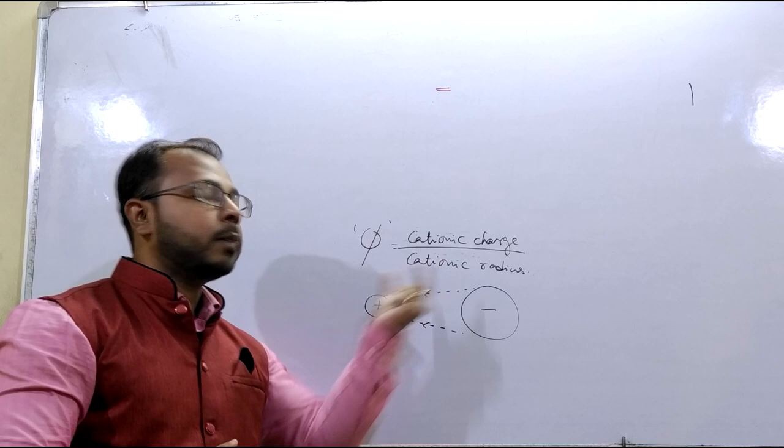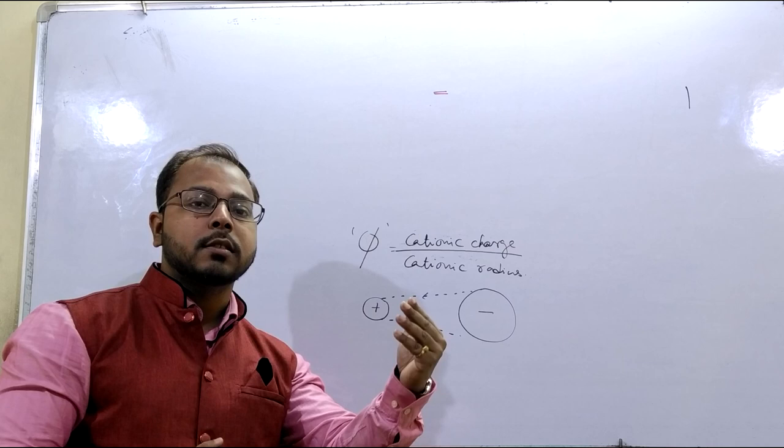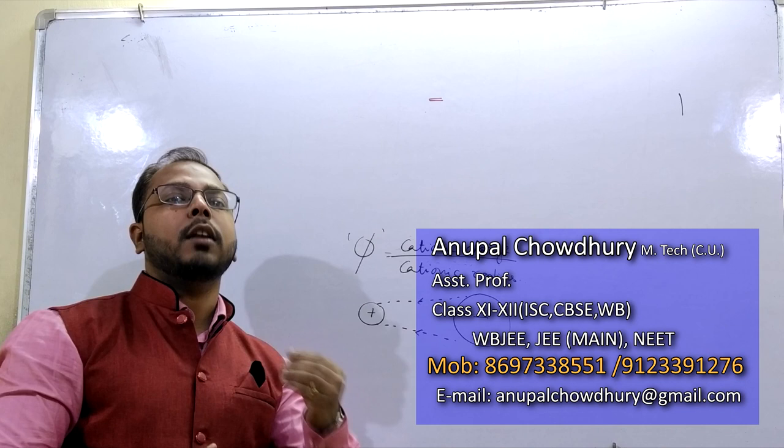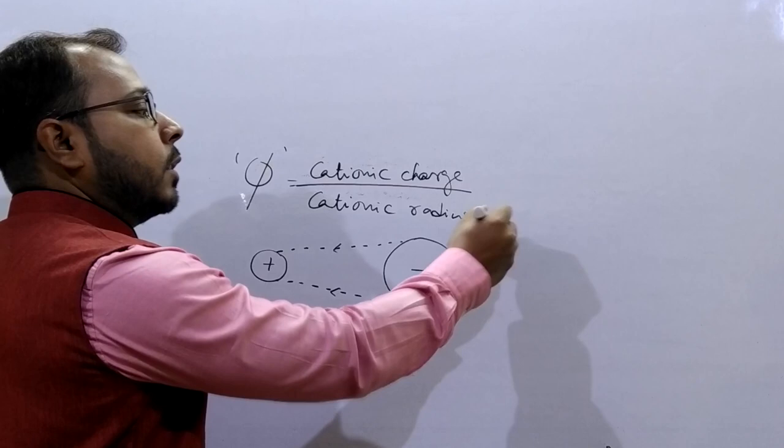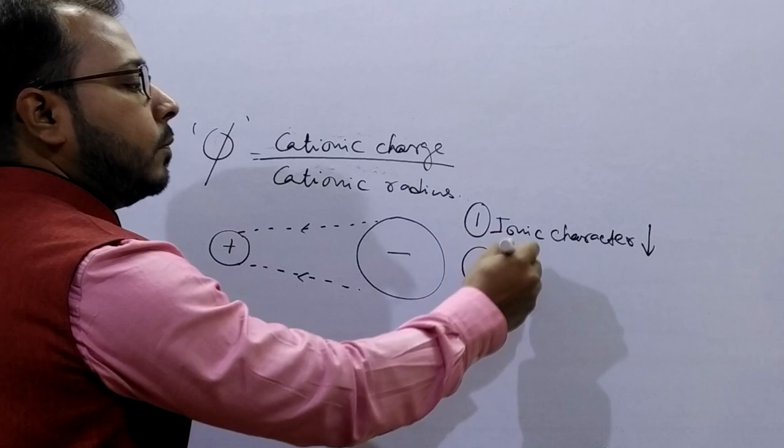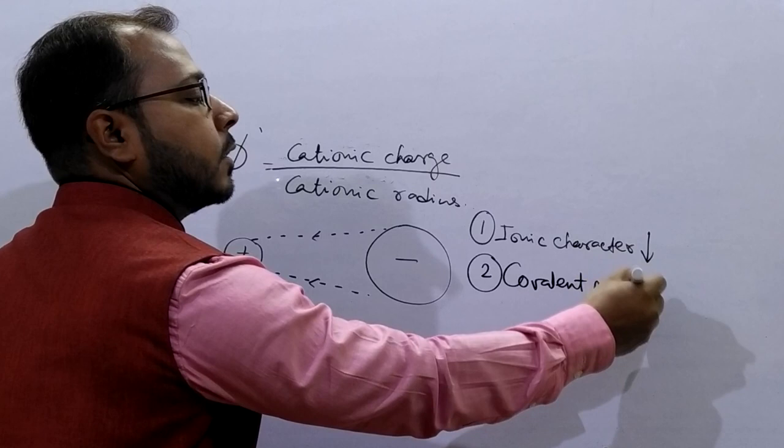So as the cationic charge increases that means phi also increases and thereby covalent nature also increases. So if phi increases then we need to memorize such parameters. That is number 1, the ionic character decreases. Number 2, covalent nature or covalent character increases.